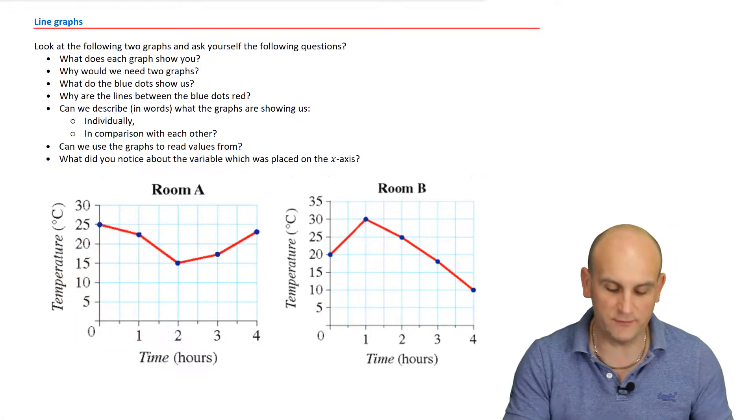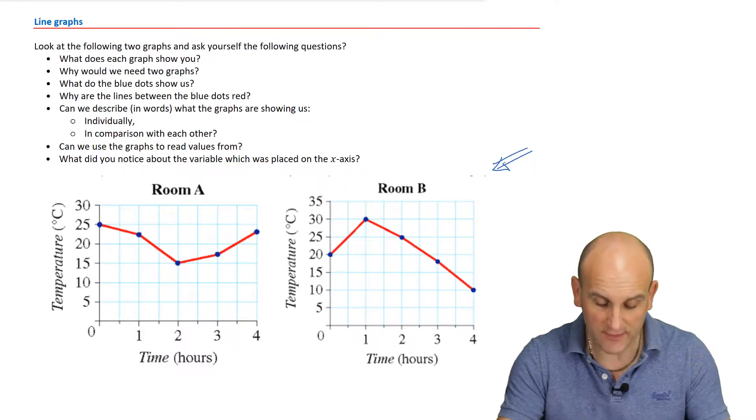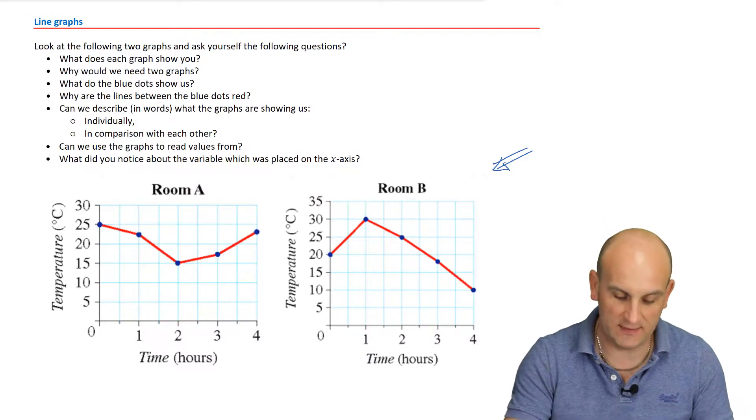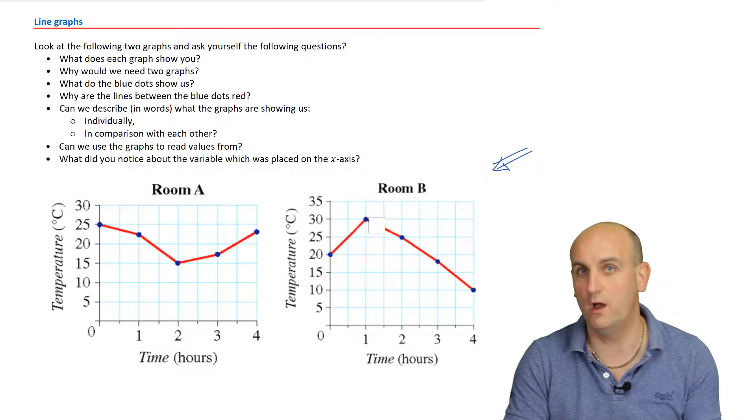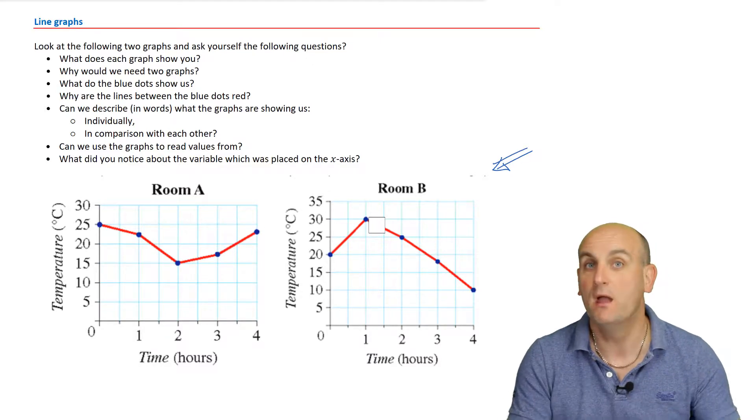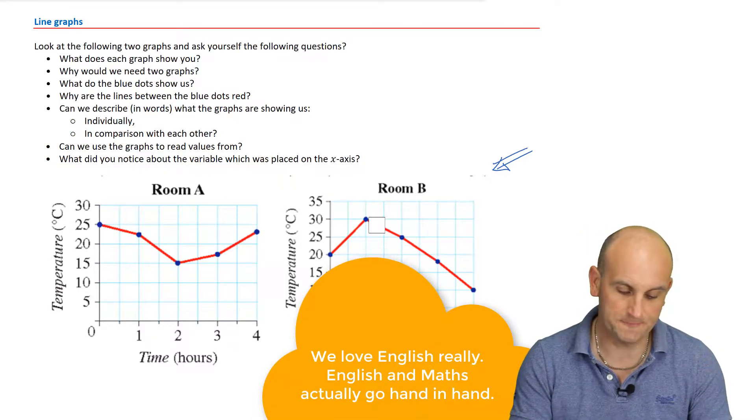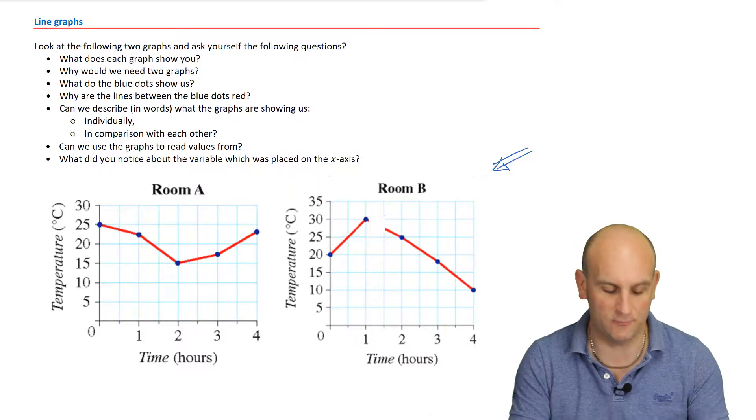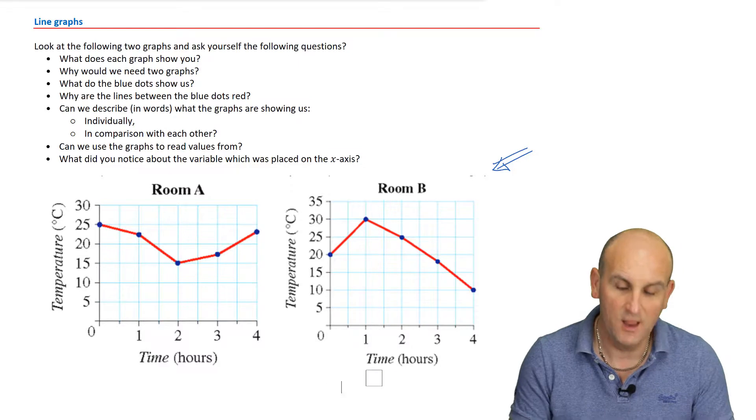Now I want you to look at these two graphs here. We've got two graphs, room A and room B. I want you to sort of ask yourself the question, what does each graph show you? Why would we need two graphs? What do the blue dots show us? Because obviously on my graph here there are some blue dots and there are some red lines. Why are some of them blue dots and some of them red lines? Can we describe in words? Because sadly math isn't just about numbers and writing down equations. Often times we have to be able to actually describe in sentences what it is the graphs are actually doing. Can we read values from the graph? Can we, if the question said what was the temperature in room B at one and a half hours, can we actually read off what that value is? And what do you notice was the variable that was placed on the x-axis? Now all of these questions are actually really important.